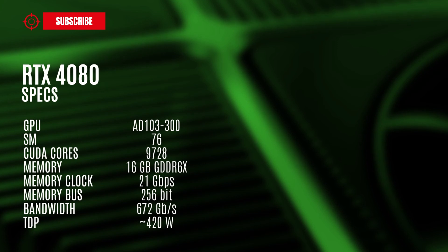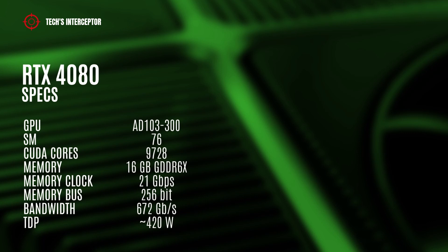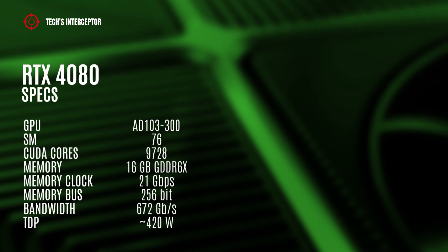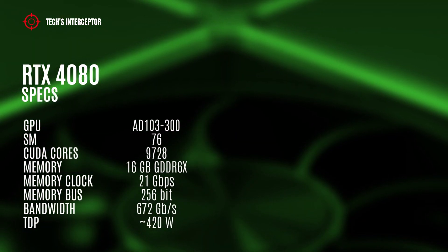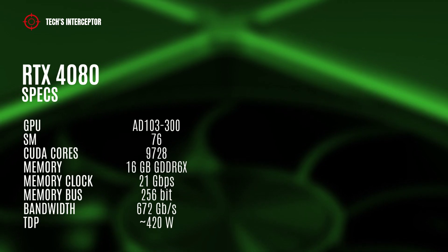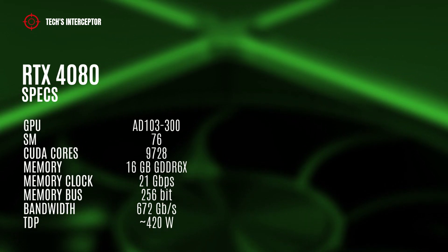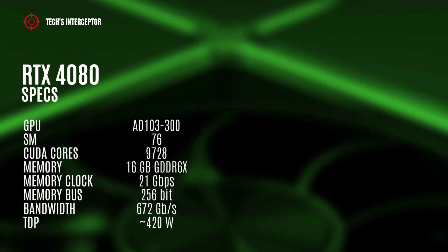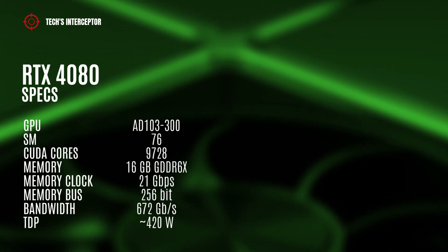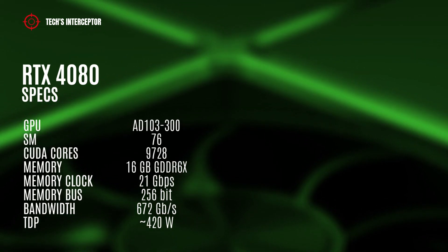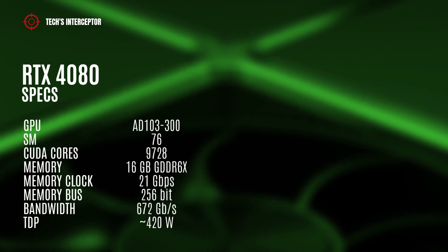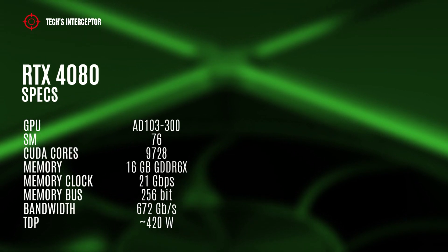Until now, the RTX 4080 specification had the AD103-300 GPU with 76 streaming multiprocessors, 9728 CUDA cores, 16 GB of GDDR6X memory operating at 21 GB per second, 256-bit memory bus and 672 GB per second of memory bandwidth, with a TDP of 420 watts.